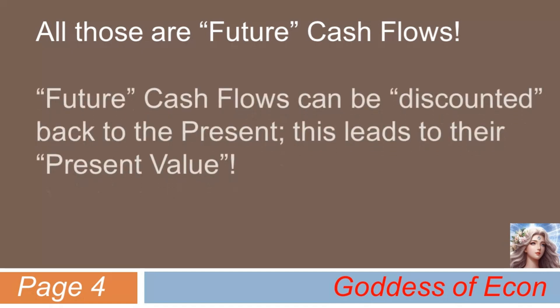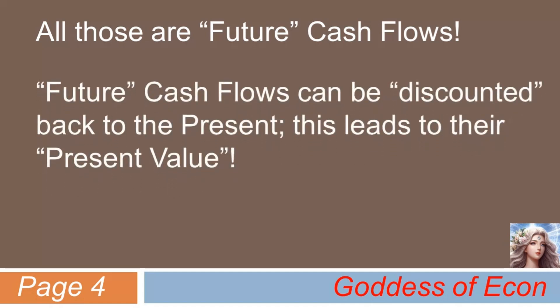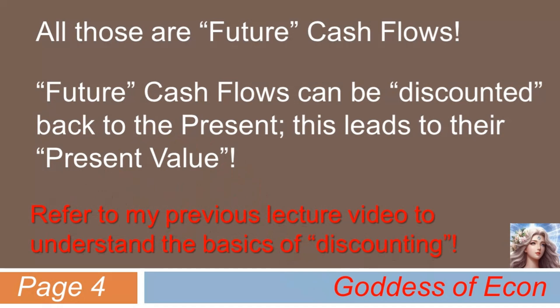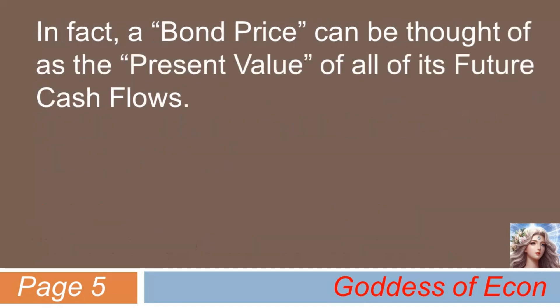What I would like to point out at this point is that all these cash flows are future cash flows. Future cash flows can always be discounted back to the present day, which would lead to the present value, or the PV. Please refer to my previous lecture video in the finance category if you want to understand the basics of discounting and the present value. I won't get into details here, as it will be redundant.